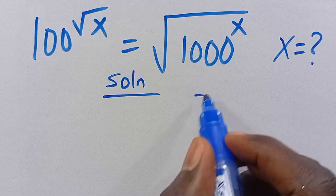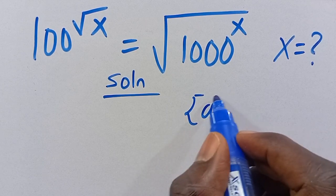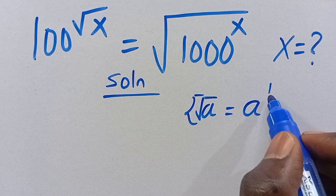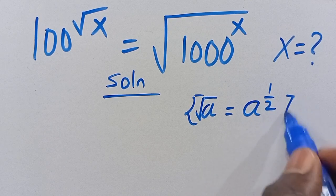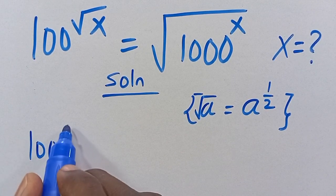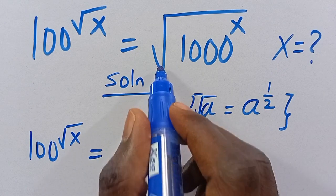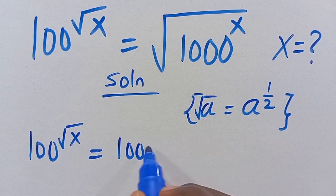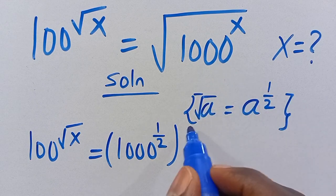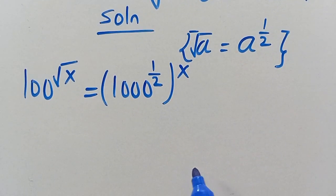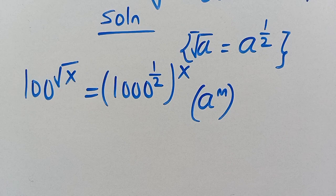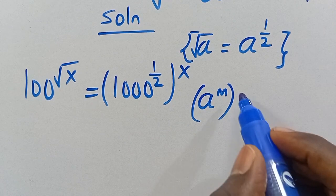First, recall that the square root of a number equals that number to the power of 1/2. So we can rewrite the right side: root of 1000 to the power of X becomes 1000 to the power of 1/2, in parentheses, to the power of X.